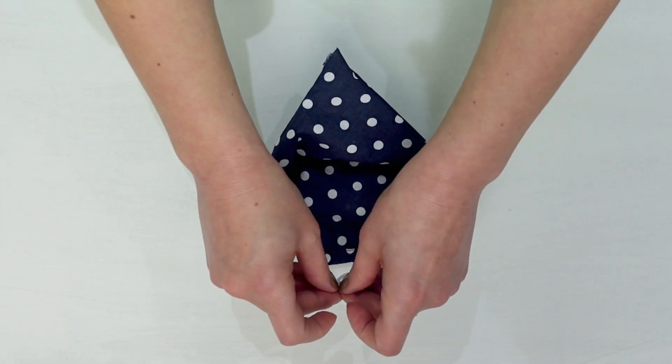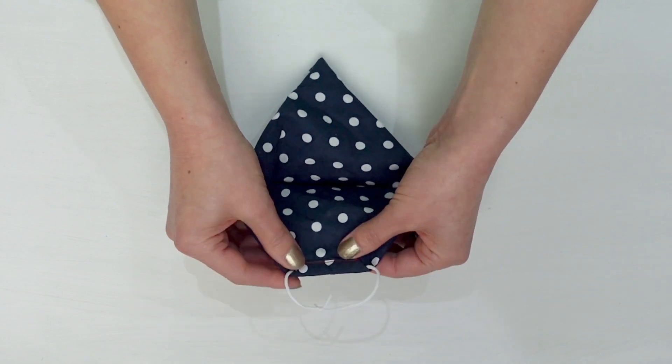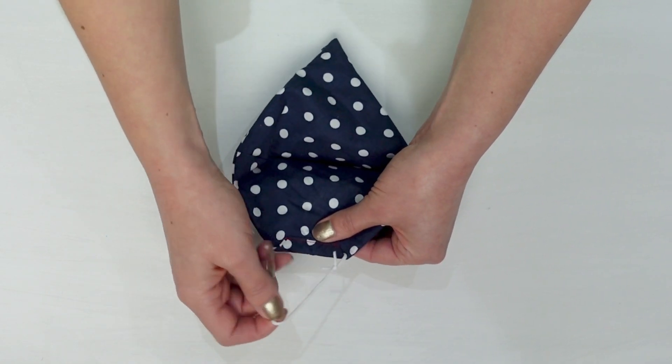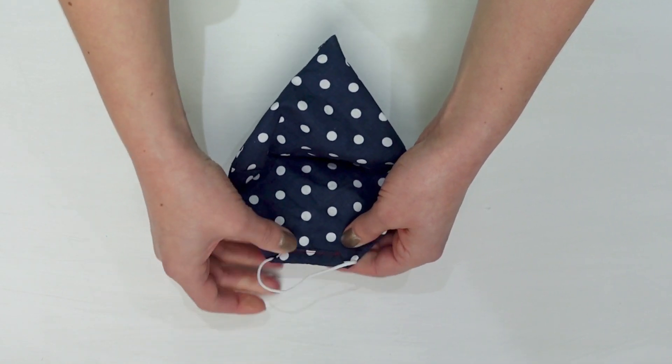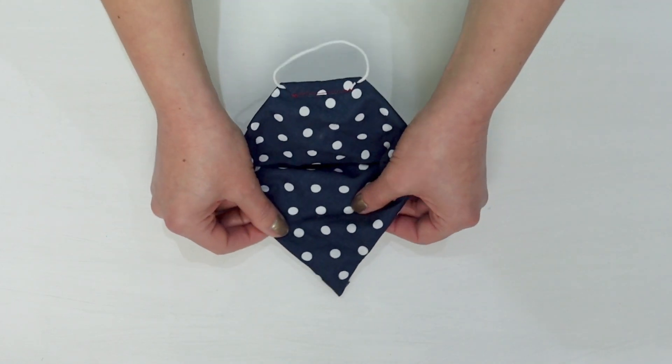Once the elastic is through, simply tie a knot and then pull on the elastic to hide the knot inside the channel. Now you just need to repeat that on the other side.